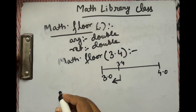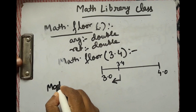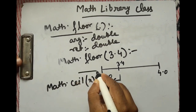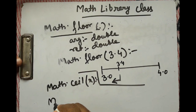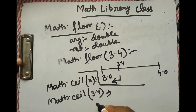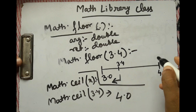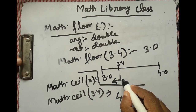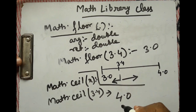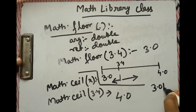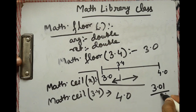Similarly, we have Math.ceil(). If we write Math.ceil(3.4), the answer will be 4.0. The ceiling is the upper value, so the ceiling of 3.4 is 4.0. Even if you have 3.01, the ceiling answer will still be 4.0.